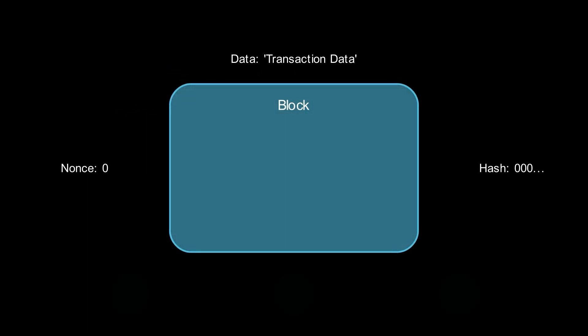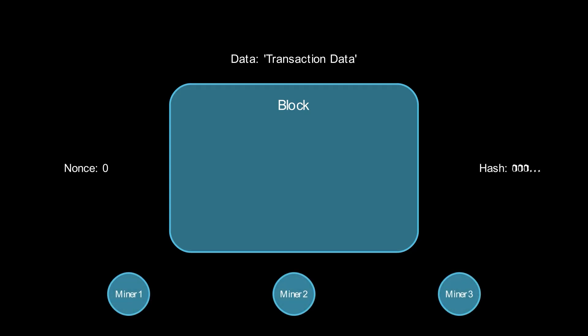To add a block to this chain of blocks, miners solve a cryptographic puzzle. They do so by searching for a special number called a nonce, so the block's hash starts with a set number of zeros. This process relies on brute force, and the difficulty scales exponentially.